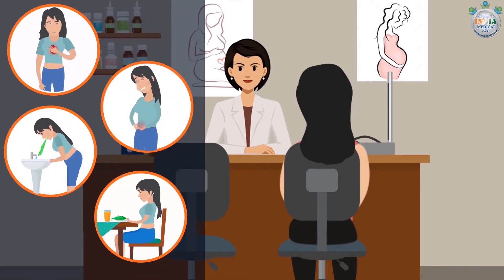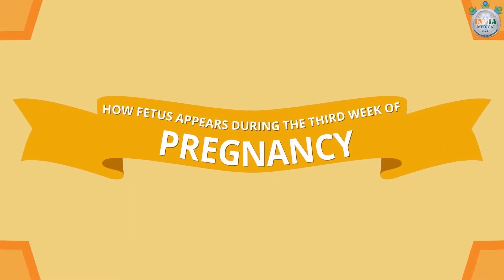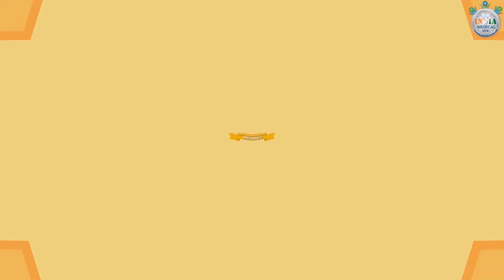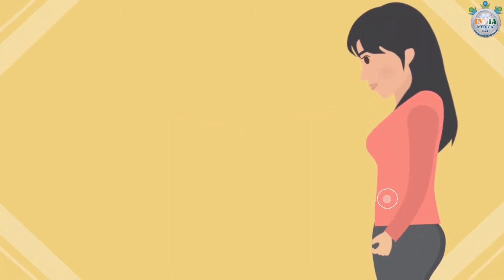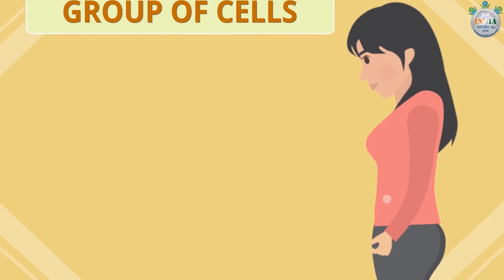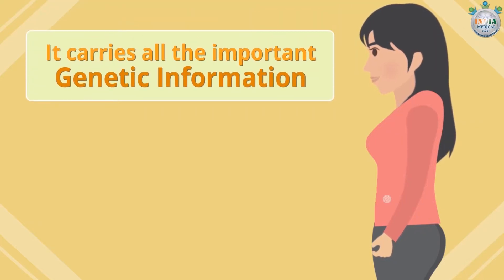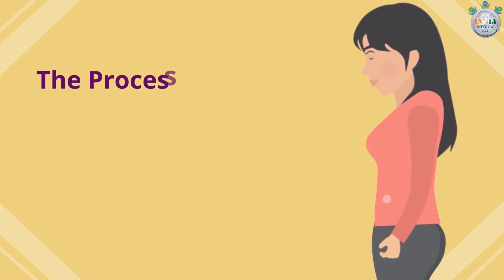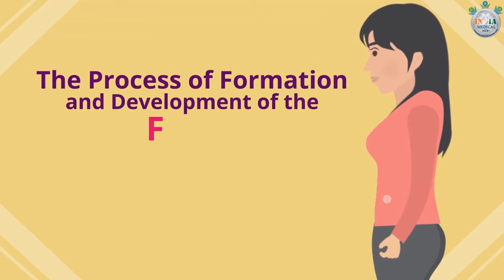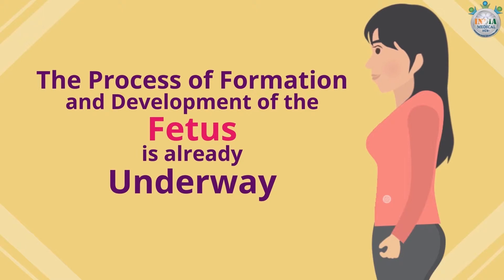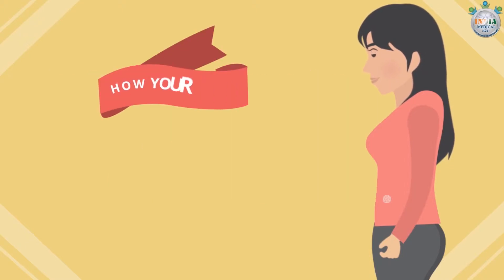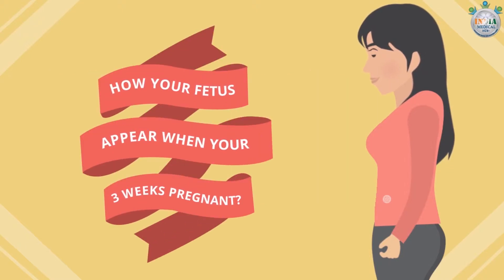During the third week of an obstetric pregnancy, your future kid is just a group of cells. It carries all the important genetic information, and the process of formation and development of the fetus is already underway.